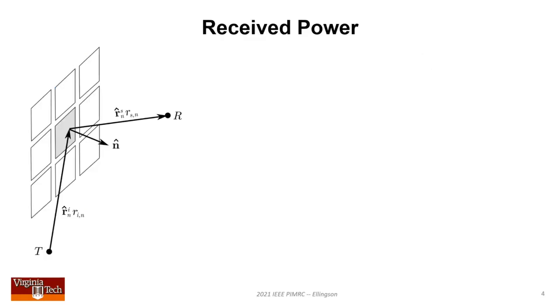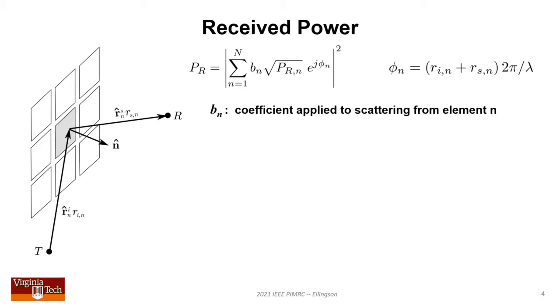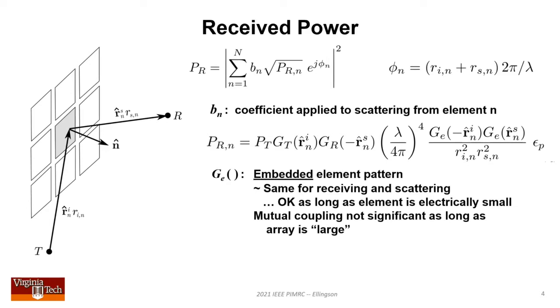We evaluate total scattering as the sum of scattering from the elements. I'm summing over contributions from each of the N elements. B sub n is the phase associated with total path length, separate from what the RIS is trying to do. B sub n is the magnitude and phase the element imparts. The contribution from each element is given by this expression where G sub E is the embedded element pattern.